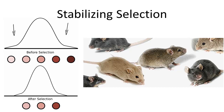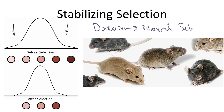Remember Darwin's theory of natural selection? Darwin's theory states that organisms with the traits best suited for their environment will survive and reproduce, and therefore pass on their genes. After generations and generations of this process, it would ultimately lead to a new species, or perhaps extinction of a species.